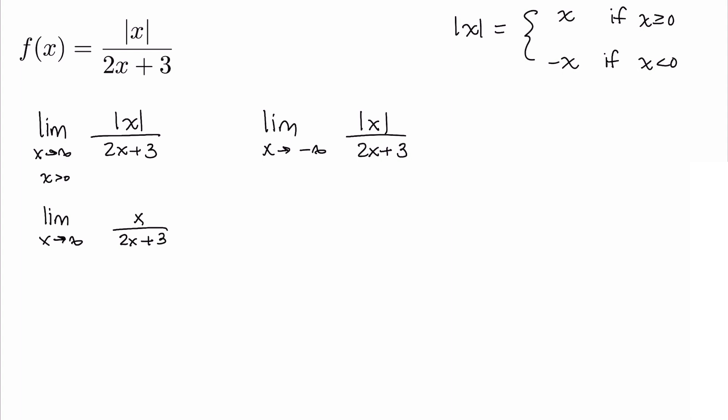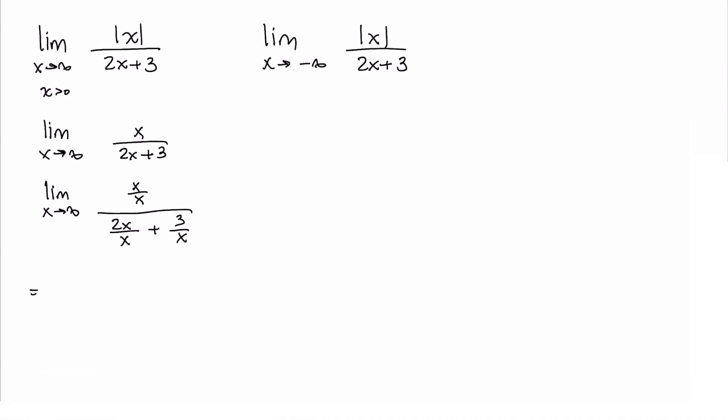We divide by the highest power in the denominator, which is x. So we take the limit as x approaches infinity, dividing every term by x. You have x over x, over 2x over x plus 3 over x, and then we simplify.